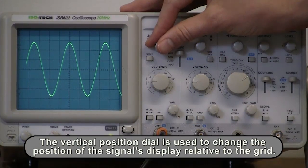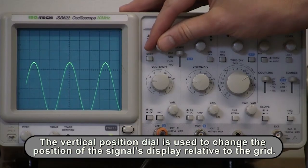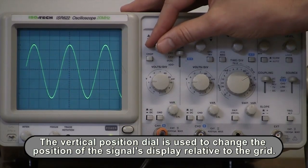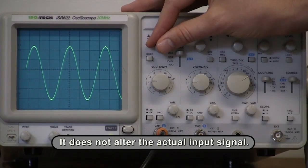The vertical position dial is used to change the position of the signal's display relative to the grid. It does not alter the actual input signal.